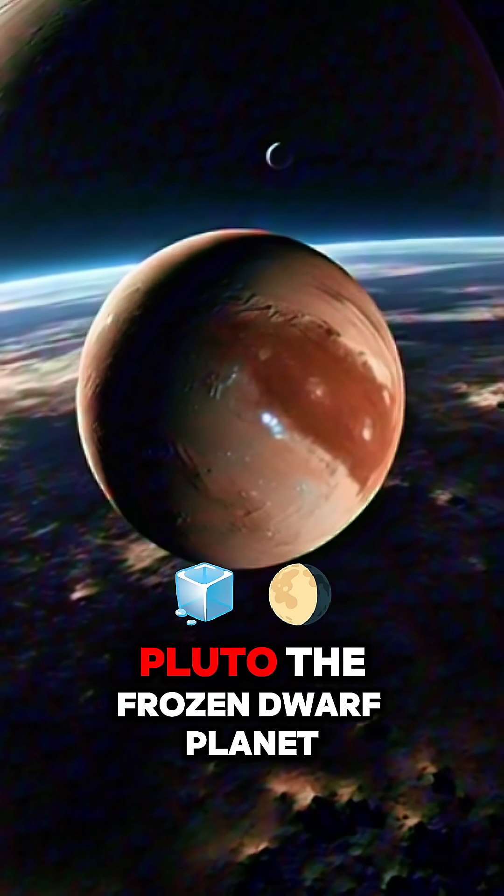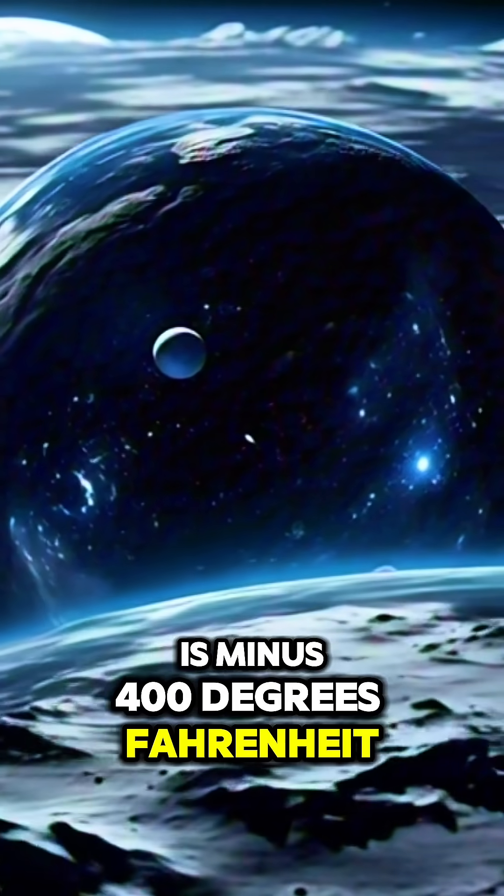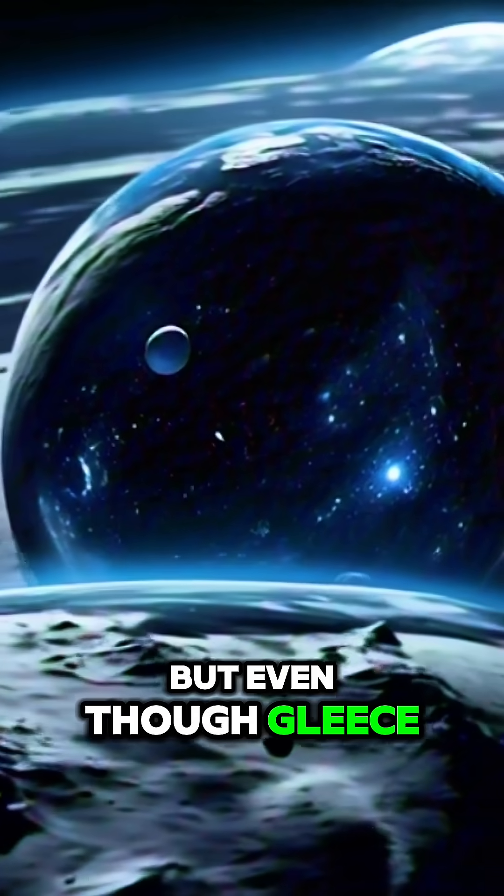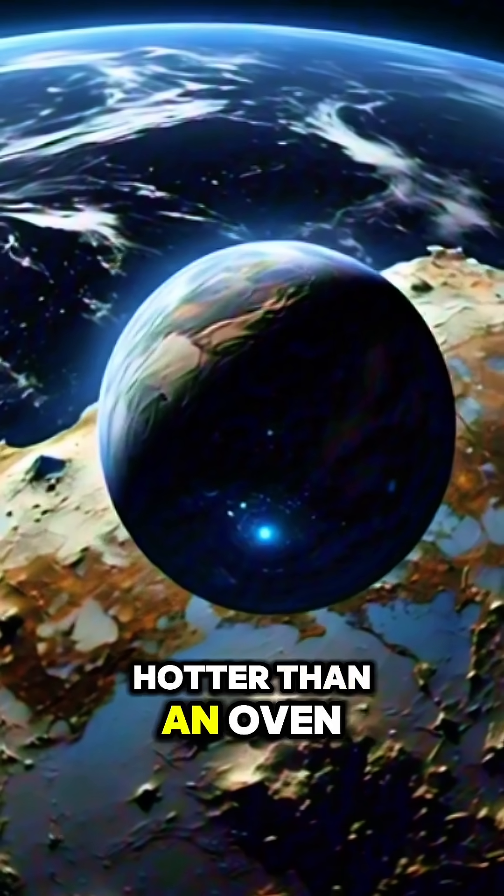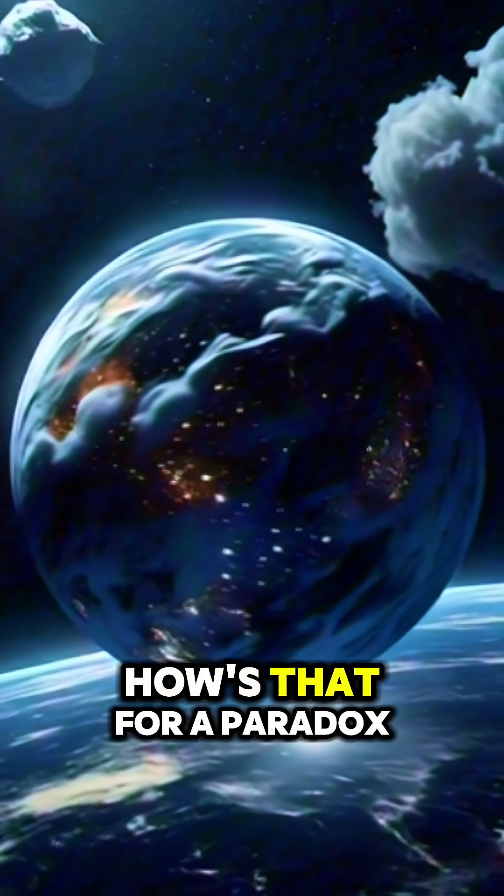Pluto, the frozen dwarf planet, is minus 400 degrees Fahrenheit. But even though Gliese 436 b is hotter than an oven, its ice stays solid. How's that for a paradox?